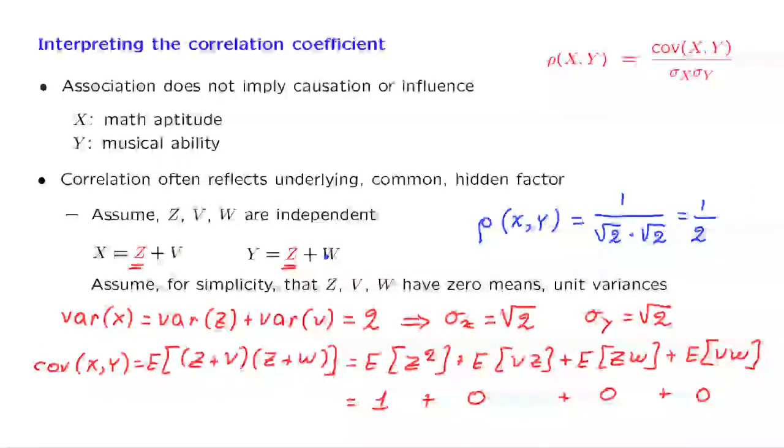If v and w were completely absent, the correlation coefficient would have been 1. If, on the other hand, v and w had a huge variance so as to completely hide the effect of z, then the value of the correlation coefficient would have been much, much smaller, perhaps closer to 0. And in the extreme case, of course, where z is completely absent, then x and y are independent and we get a correlation coefficient of 0.